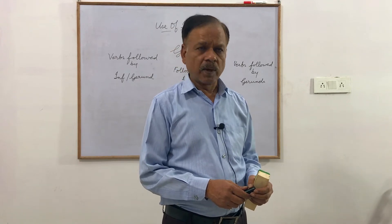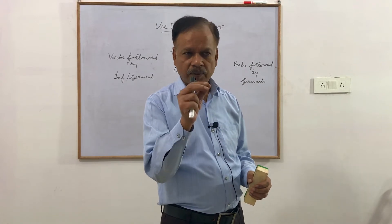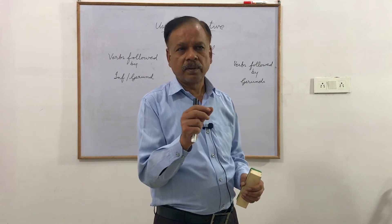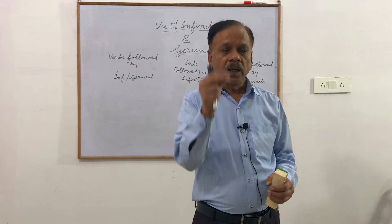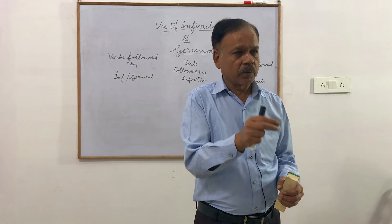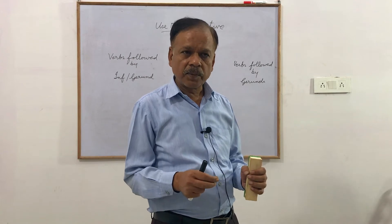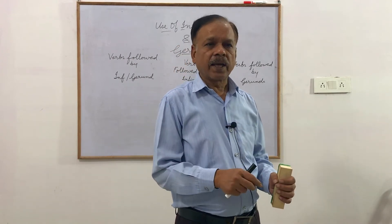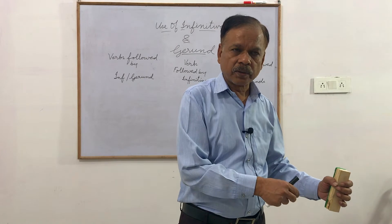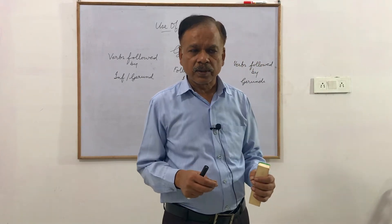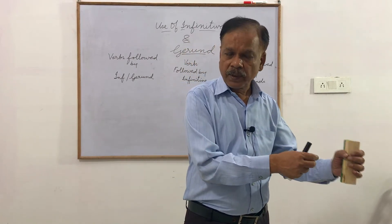And in some verbs, the pattern of the sentence is different — subject, verb, then indirect object and direct object. That means verbs with two objects. Some verbs necessarily take the indirect object after the verb and then the direct object. In these kinds of sentences, we place the infinitive in the place of the direct object.